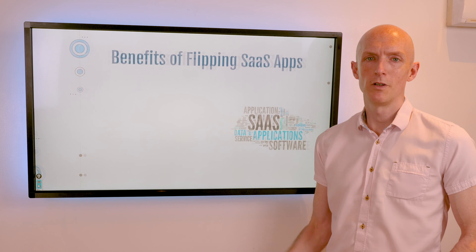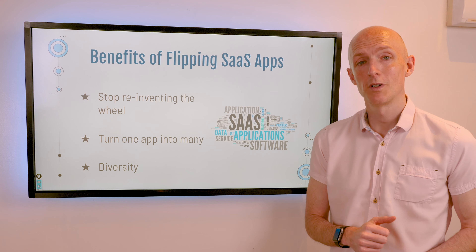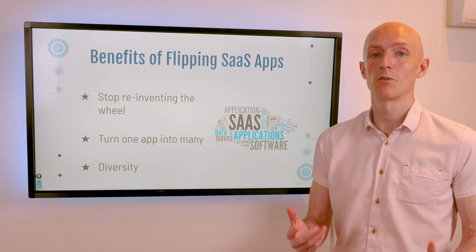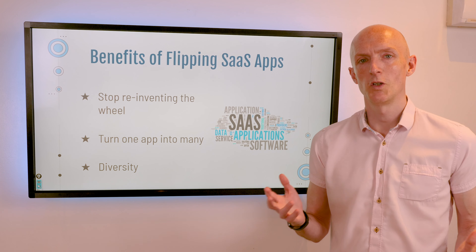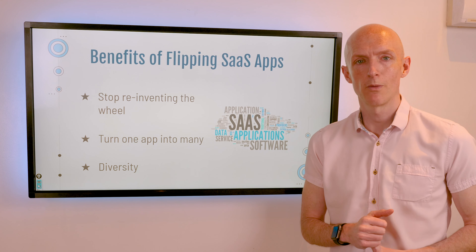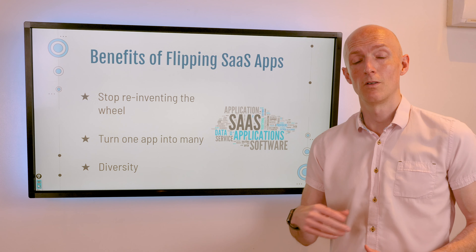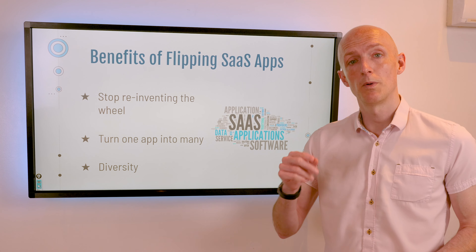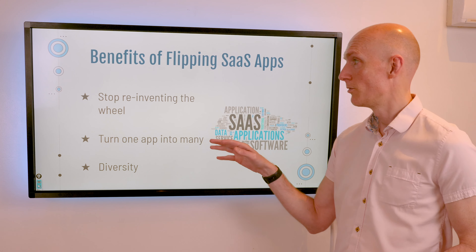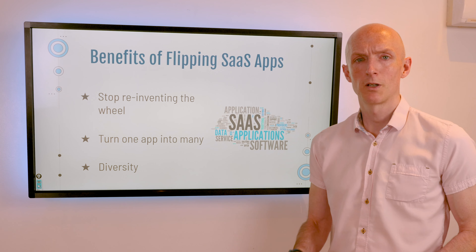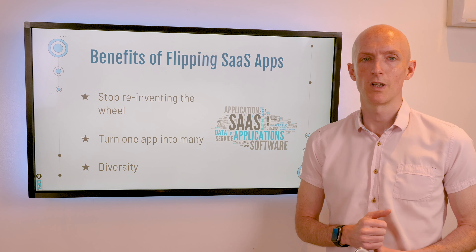The benefits of flipping SaaS apps: first, stop reinventing the wheel — you can buy an app or framework at a fraction of the cost of developing from scratch. Secondly, you can turn one app into many. For example, if you buy a pre-revenue CRM app, you could create tailored versions of that CRM platform for multiple micro niches, see which performs best, and then double down on that one. And then there's diversity — by acquiring multiple apps, you'll be able to work in multiple niches across a variety of technologies.